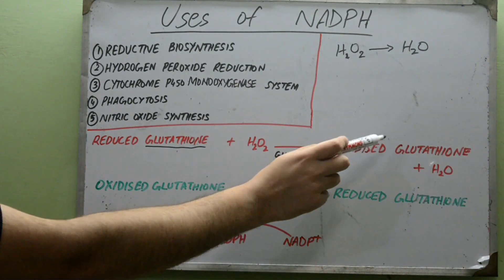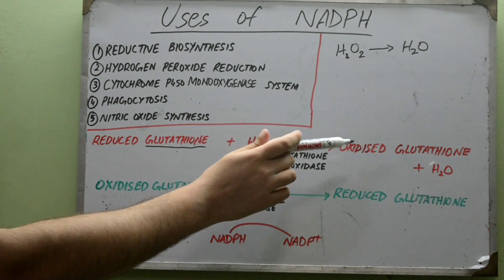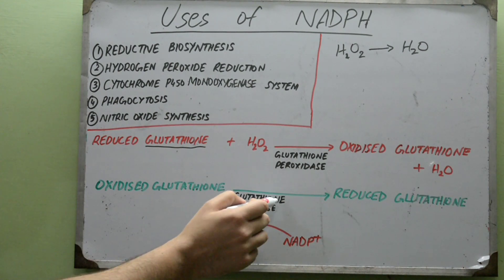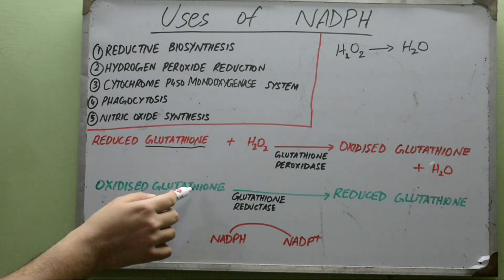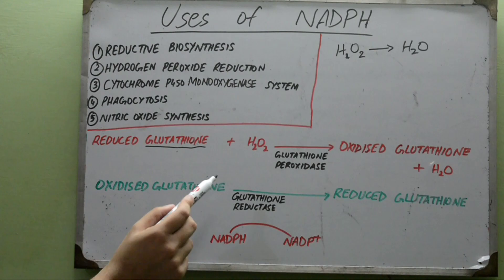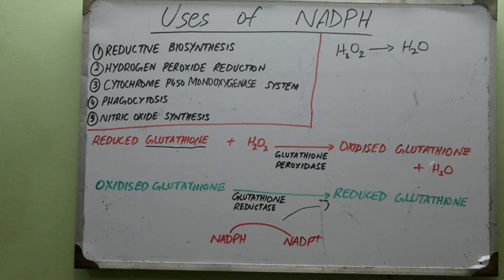This oxidized glutathione is of no use to us because it cannot again reduce hydrogen peroxide — it has already oxidized itself. So oxidized glutathione is acted upon by an enzyme called glutathione reductase, which reduces this glutathione back into its reduced form. Here, an NADPH molecule donates one of its hydrogen atoms to the glutathione molecule to form reduced glutathione, converting NADPH to NADP⁺. This is the second use of NADPH.